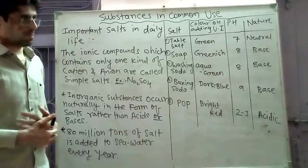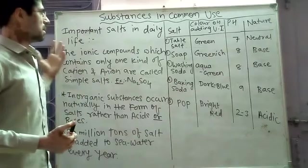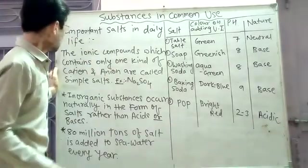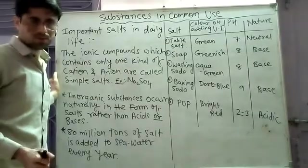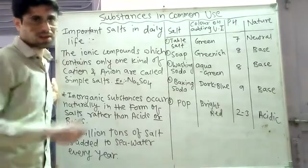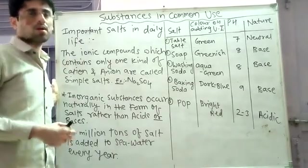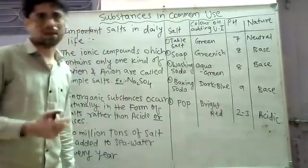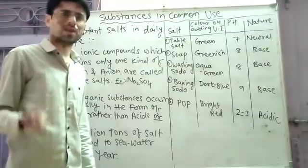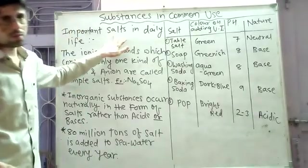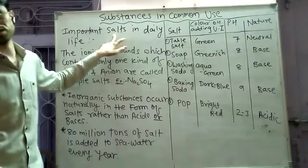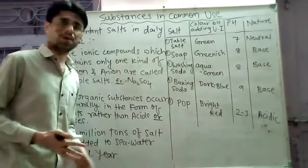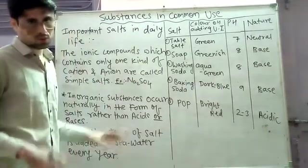We will start our chapter by discussing important salts in our daily life. An acid is a substance which consists of H+ ions in its aqueous structure. A base is a substance which consists of OH- ions in its aqueous structure. Salts are nothing but combinations of acids and bases — when acids and bases react with each other, they combine to form salts.